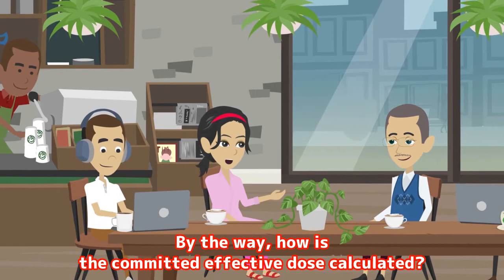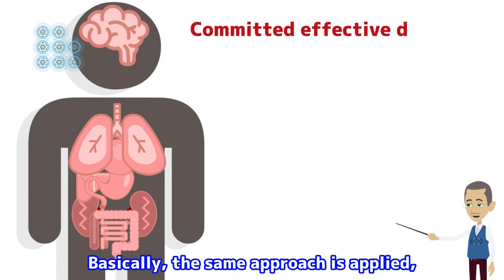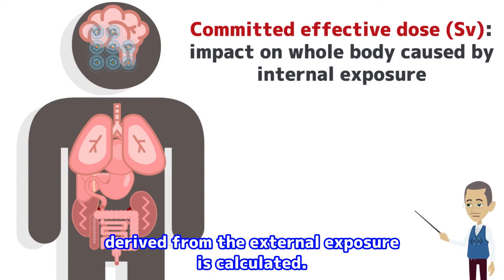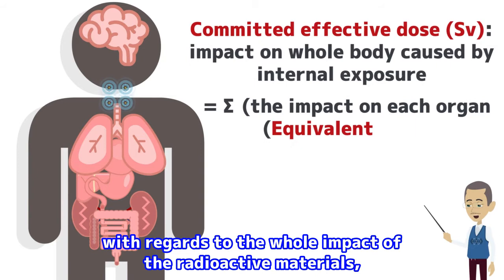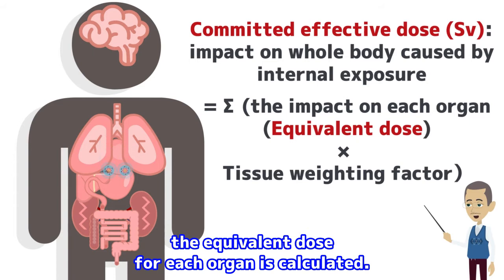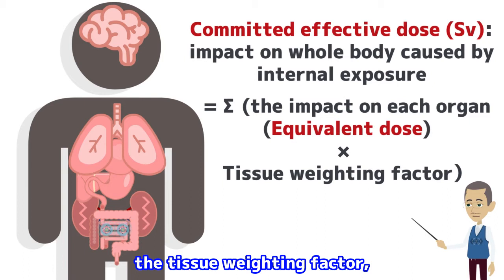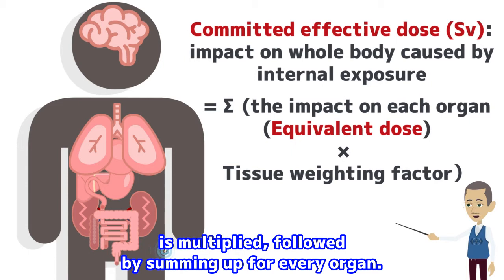How is the committed effective dose calculated? Basically, the same approach is applied as when the effective dose derived from external exposure is calculated. With regards to the whole impact of the radioactive materials until they are eliminated out of the body, the equivalent dose for each organ is calculated. After that, the tissue weighting factor, which represents the sensitivity to radiation of each organ, is multiplied, followed by summing up for every organ.